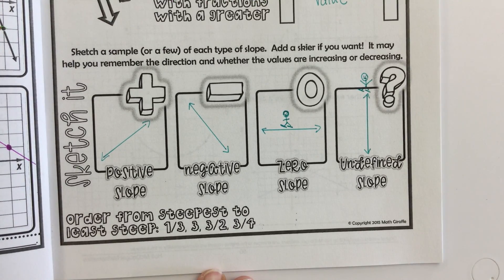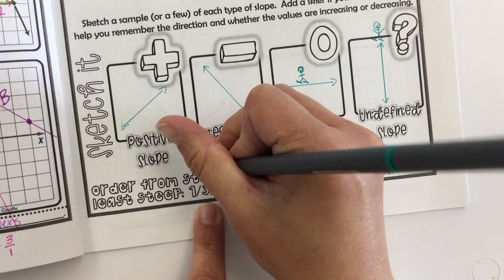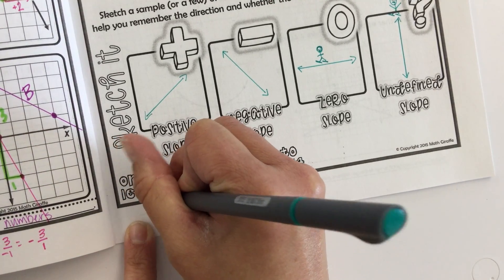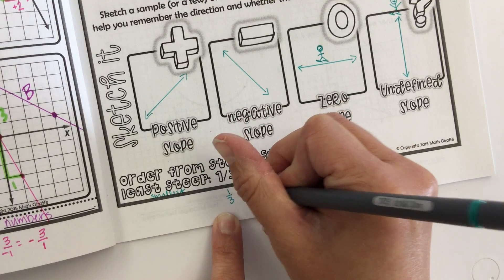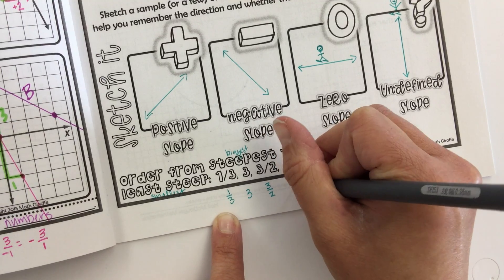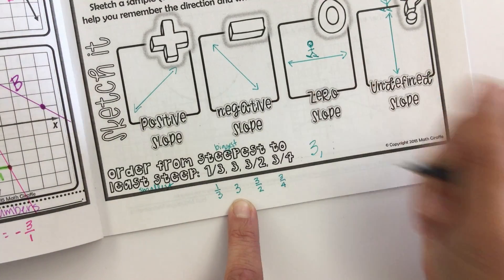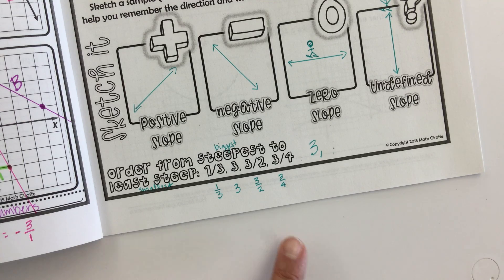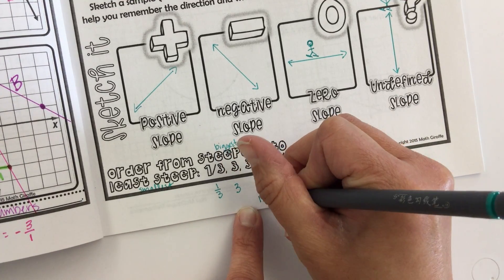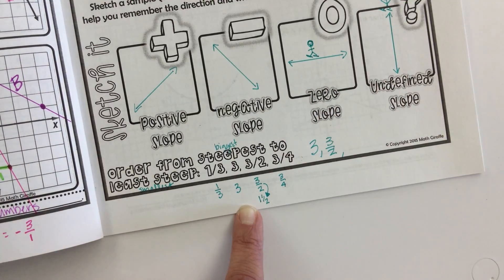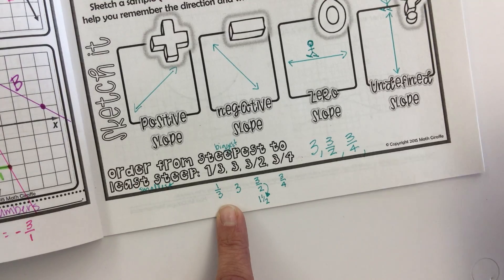Now let's practice ordering slopes from steepest to least steep. The steepest has the biggest number. Given one-third, three, three-halves, and three-fourths: three is biggest first. Three-halves is like one and a half, so it comes next. Then three-fourths. Then one-third is the smallest, so it's least steep.